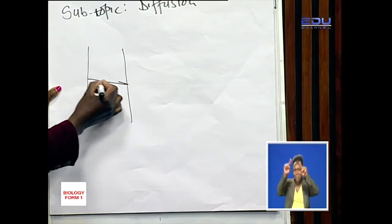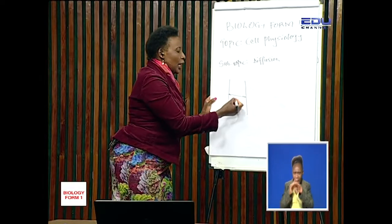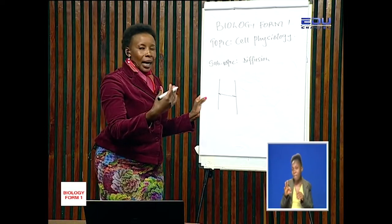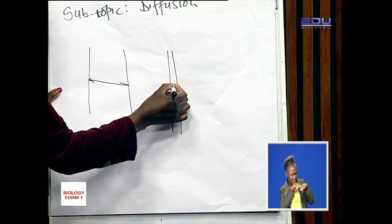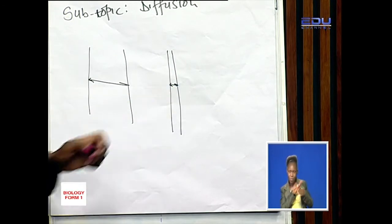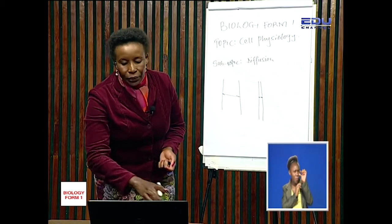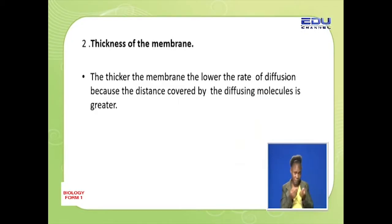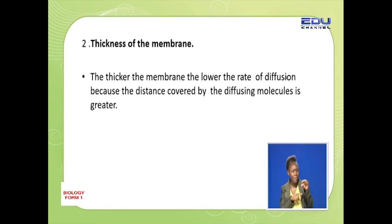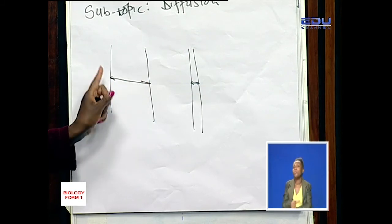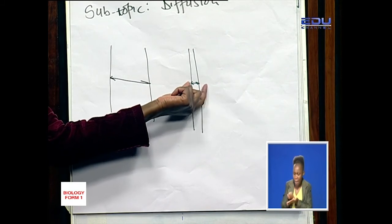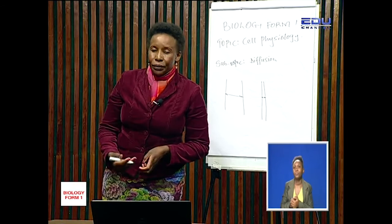If this membrane is very thick, then the particles diffusing across this membrane will take a longer time. But if we take our membrane to be narrower, then we expect the molecules or particles diffusing to diffuse faster. So regarding the thickness of the membrane, we say: the thicker the membrane, the lower the rate of diffusion, because the distance covered by the diffusing particles is greater. But the narrower the membrane, the faster the rate of diffusion.